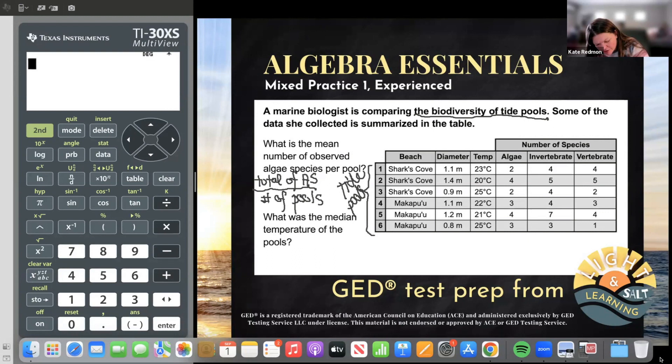And we have some information. What do we want to know? We want to know about the algae species in those tide pools. We don't care about where they're located, what their diameter, temperature, or how many invertebrate or vertebrate species there are. So first, we're going to need to take the total of the algae species. And then we're going to need to divide by those number of pools, which in this case is six.